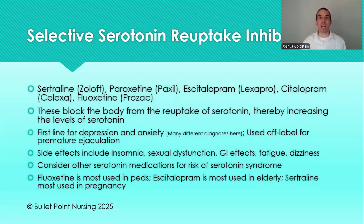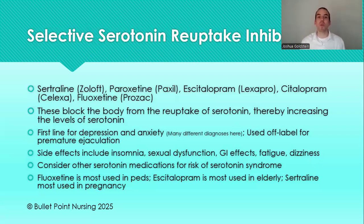In women, taking longer or being unable to achieve orgasm is usually a negative side effect, whereas in men it could be seen as a positive — that's the treatment for premature ejaculation. If using it for that purpose, the guidelines specifically recommend paroxetine, though all SSRIs can be used for it.